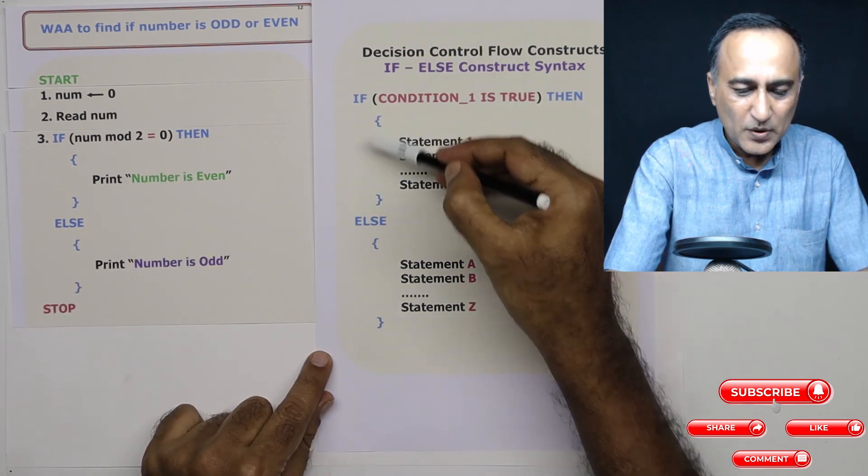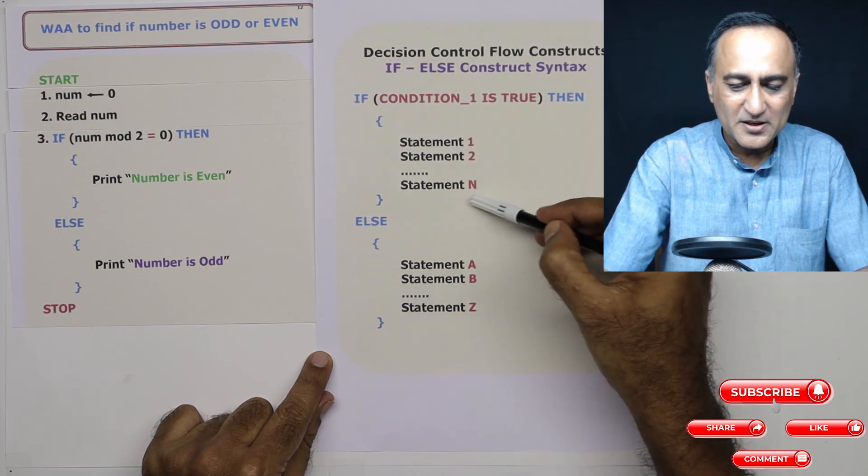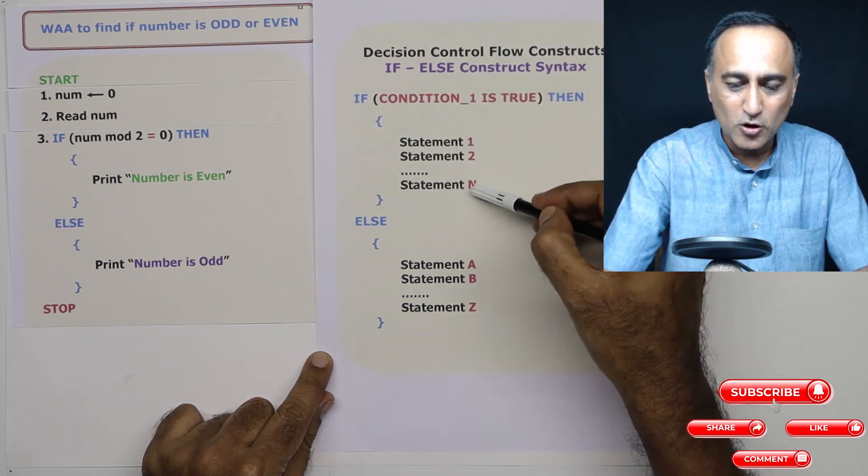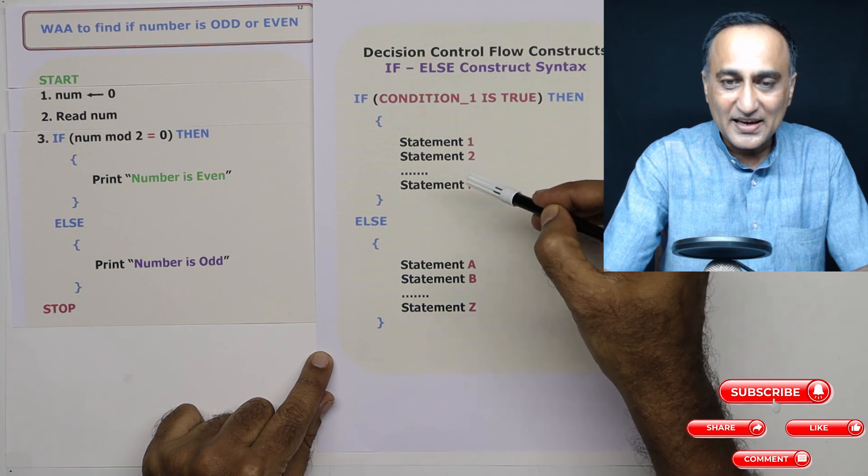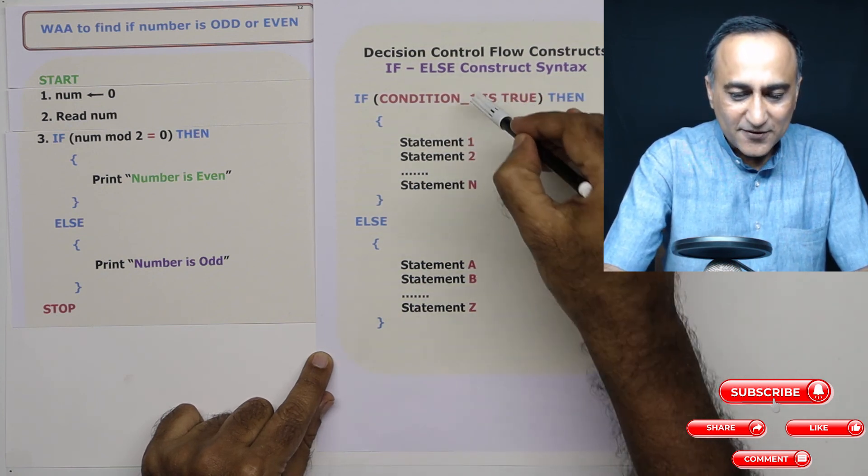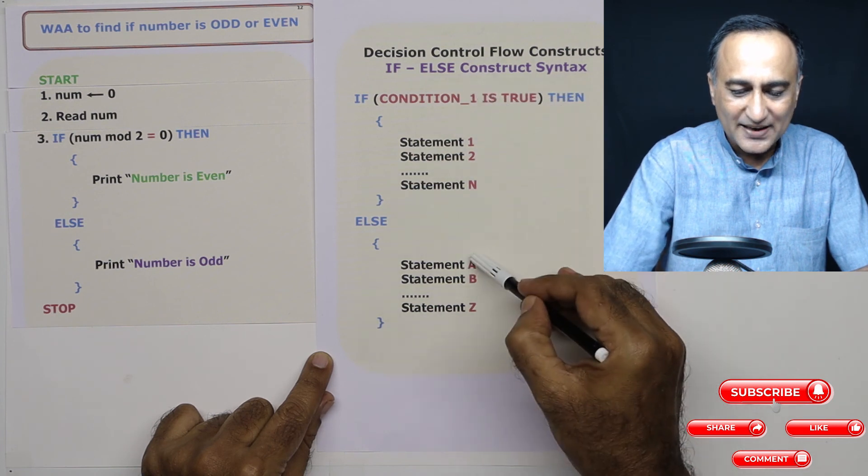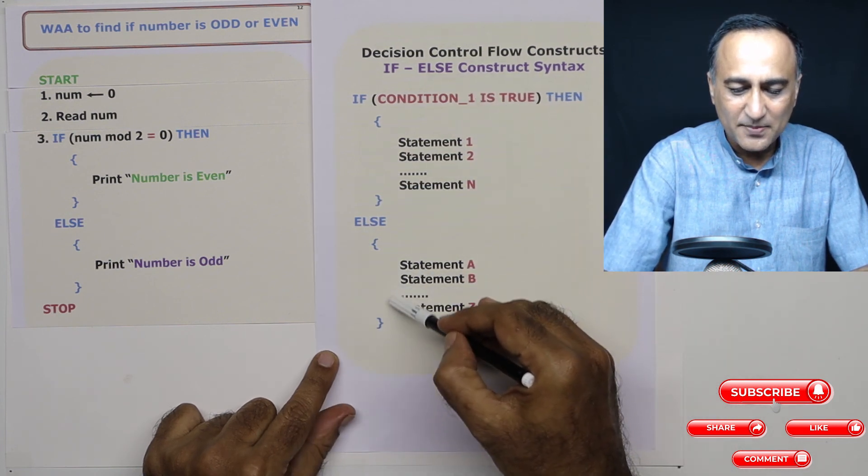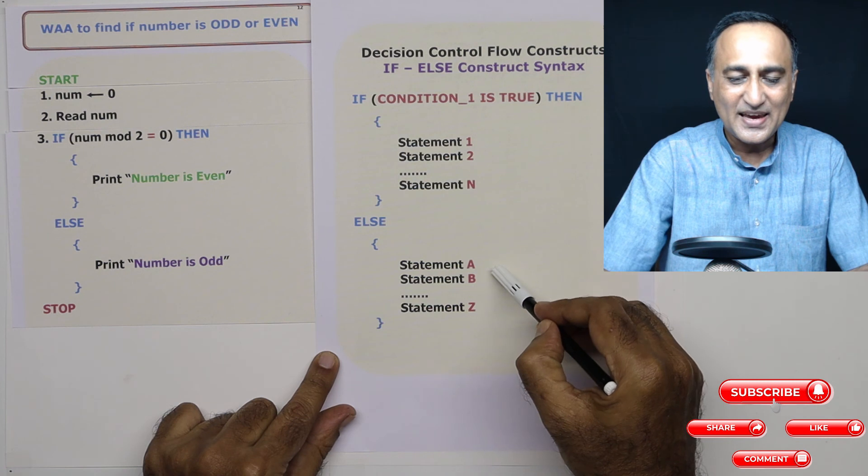Now all these between this block, any number of statements or any number of instructions zero or more will only get executed or will only run if this condition is true. If this condition is false, automatically the statement a statement we do statement Z will get executed.